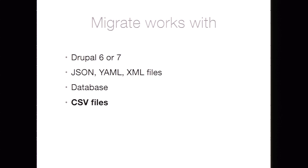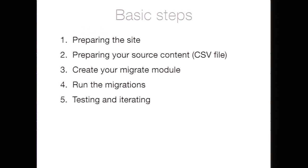Migrate works with all kinds of different sources — CSV files are the example I'll use today. The basic steps for creating a migration in Drupal: first, prepare the website for the content you're going to create, at least having the content types set up. If you're creating taxonomy terms or users, configure those elements too. Then prepare the content source — in this case our CSV file — create the migrate module for your custom migration, run the migrations, then test and iterate, because it's probably not going to work exactly like you expected the first time.